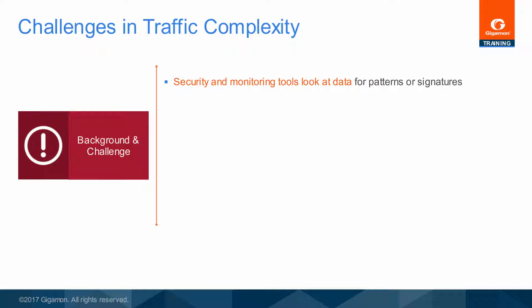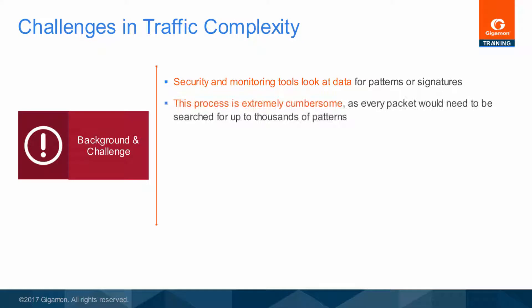Security and monitoring appliances look at session and application layer data for patterns, also called signatures. They search for these patterns across huge volumes of real-world traffic. This process is extremely cumbersome, as every packet would need to be searched for hundreds and sometimes thousands of patterns. There is a need for the ability to extract relevant flows of interest that match specific patterns or applications and forward them to tools that need this data.